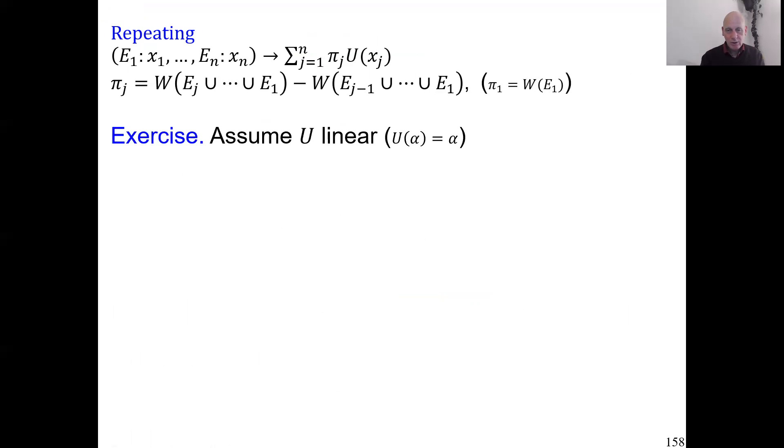We're assuming rank-dependent utility with the utility function linear. Assume that you are in experimental heaven. How would you go about measuring the weight of event E? So you can think about it, pause the video, and I advise you to think longer. If you don't see it easily, spend more time thinking, look again at the formulas that we just defined, and try to see how it works.